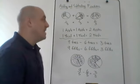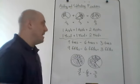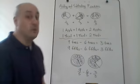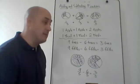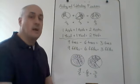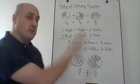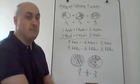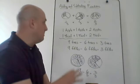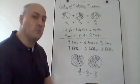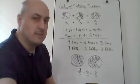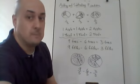That's adding and subtracting fractions when we have a common denominator — we don't have to do anything fancy, we just add or subtract the numerators. Now I'm going to put up some examples of what we do when the denominators don't match — then it gets a little more complicated.